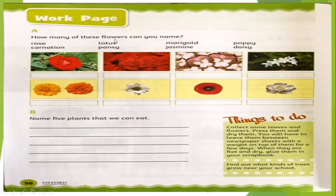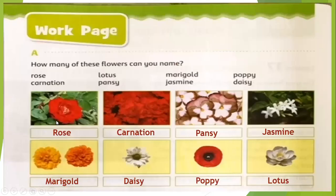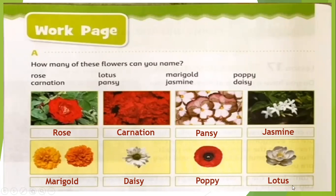Then we have the work page. How many of these flowers can you name? You have to write the names given under the picture of each flower. This one is the rose; these are carnation; this one is lotus; this is pansy; this one is marigold; this is jasmine; this is poppy; and this is daisy. It's better for you to learn the names of these flowers: rose, carnation, pansy, jasmine, marigold, daisy, poppy, and lotus.